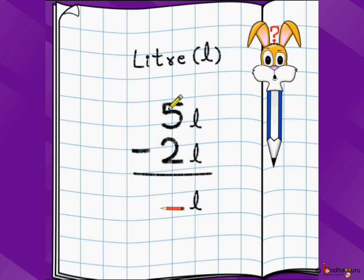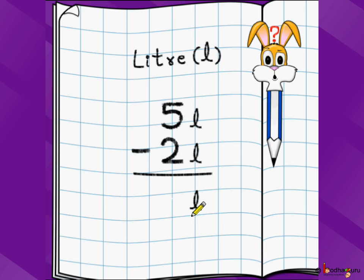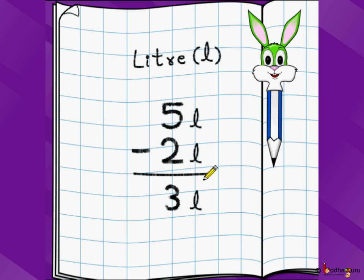Let us say you want to do subtraction of 5 litre minus 2 litre. We write 5 litre minus 2 litre, underline, and then we write the result also in litres because both the units are in litres. So 5 minus 2 is 3. The answer is 3 litre. Very simple.